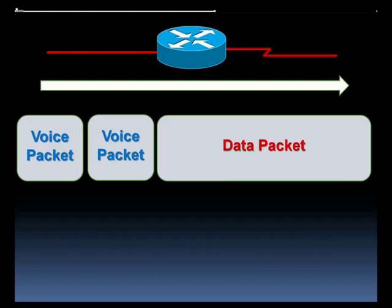Serialization delay is the time it takes a packet to get out on the wire. To give you an extreme example, let's say this was only a 56k interface. If this were a 56k interface and the data packet were 1500 bytes in size, the serialization delay would be about 214 milliseconds. In other words, the voice packet has already experienced too much delay before it even gets out on the wire, where it will experience even more delay. This can destroy our quality of service.